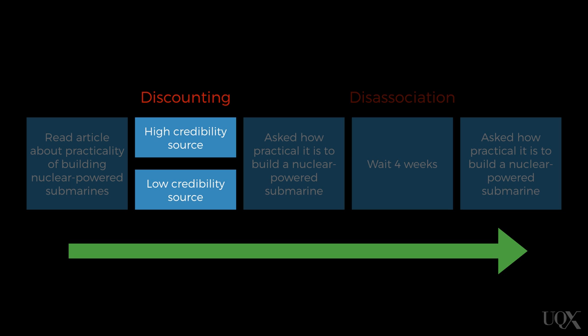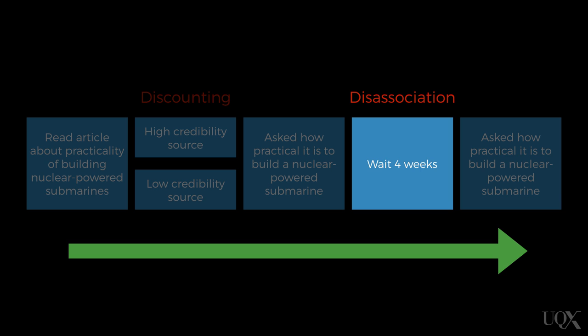The second process was dissociation, which is the uncoupling of who the communicator is from what they said. Dissociation happens when there's a delay between when the message is presented by the communicator and when participants' attitudes are measured.